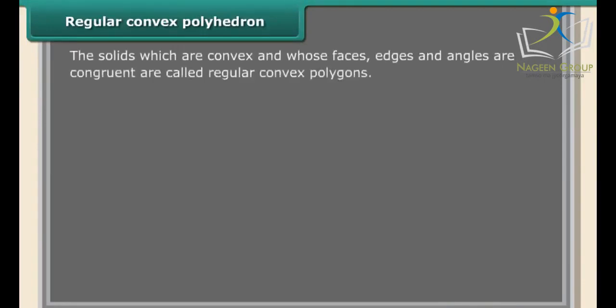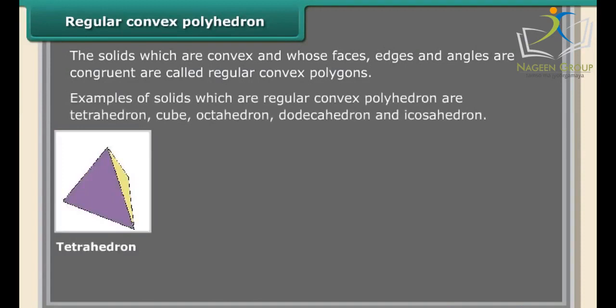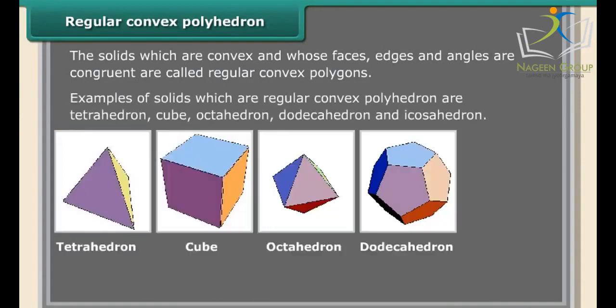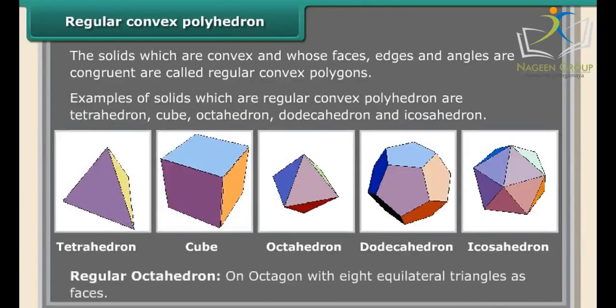Solids which are convex and whose faces, edges, and angles are congruent are called regular convex polyhedrons. Examples include tetrahedron, cube, octahedron, dodecahedron, and icosahedron. A regular octahedron has eight equilateral triangles as faces.